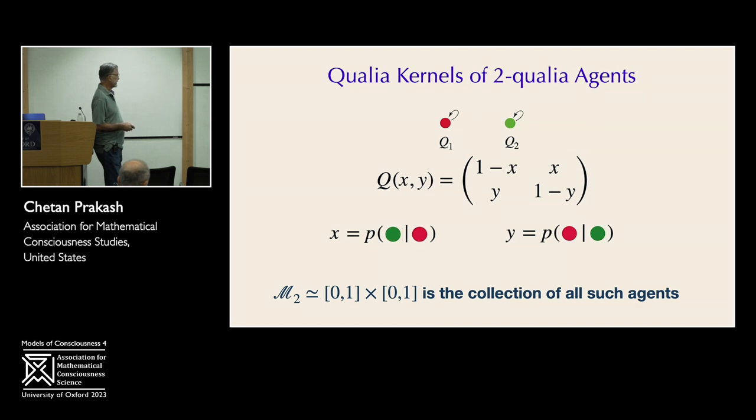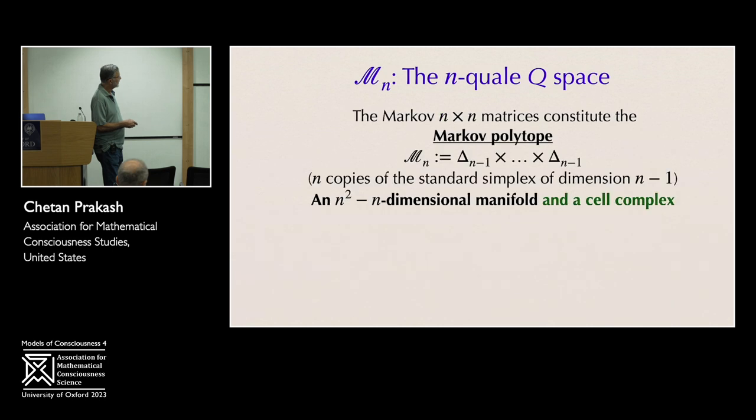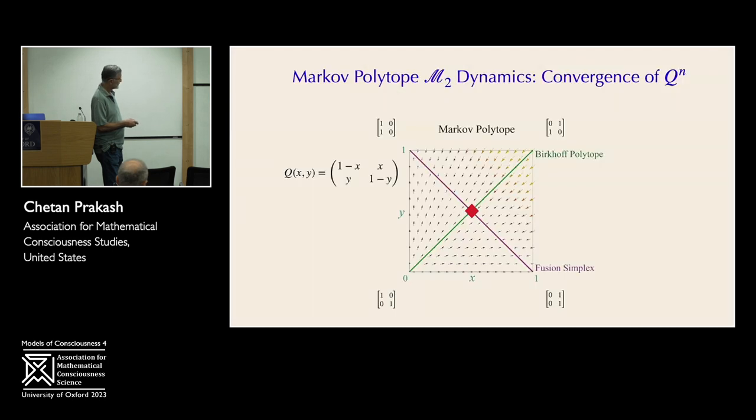And if you look at the collection of all such possible kernels, that's simply a product of the unit simplex in one dimension. And it can be depicted in... oh wait a minute. I think I have a slide slightly opposite where it should be. This is M2, simply the collection of all two qualia kernels. It's in the unit square.